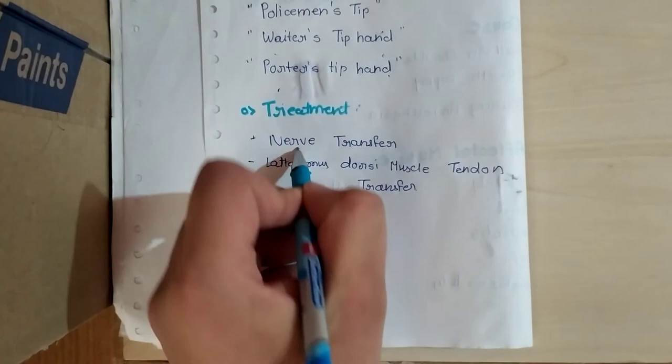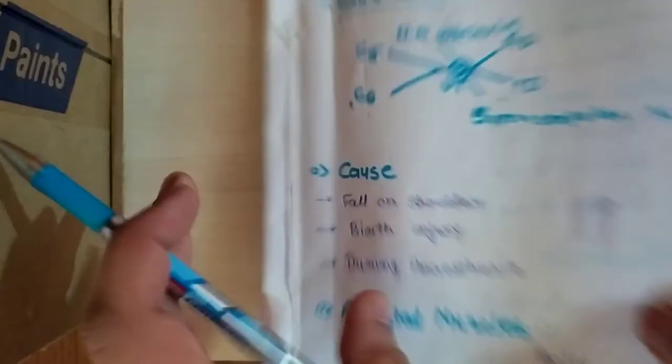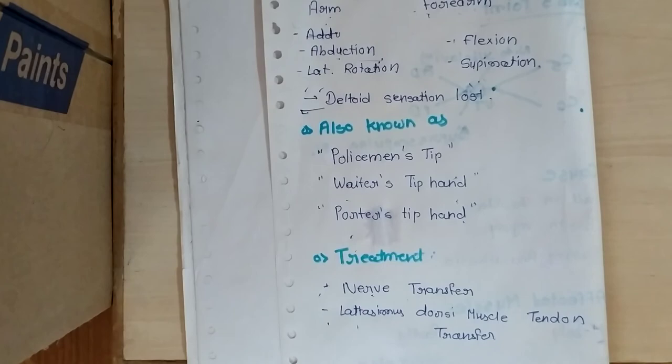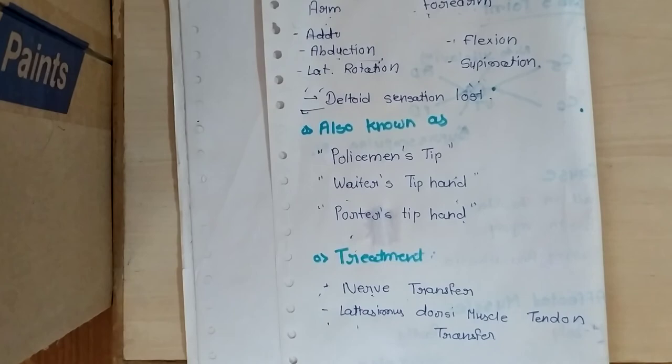This is important for first MBBS. It's also known as policeman's tip and waiter's tip. So this is all about Erb's paralysis, thank you.